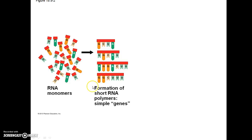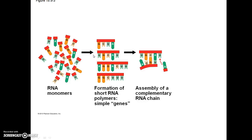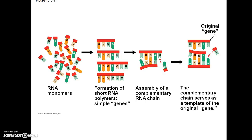Here we have a visual representation of this process. We have RNA monomers with a nitrogenous base, followed by the formation of short RNA polymers — RNA monomers assembling together — which would make up simple genes. Then we see the assembly of a complementary RNA chain, just as base pairing occurs in modern-day DNA and RNA through the process of transcription. This would also occur with these early RNA genes, and the complementary chain would serve as a template for the original gene.